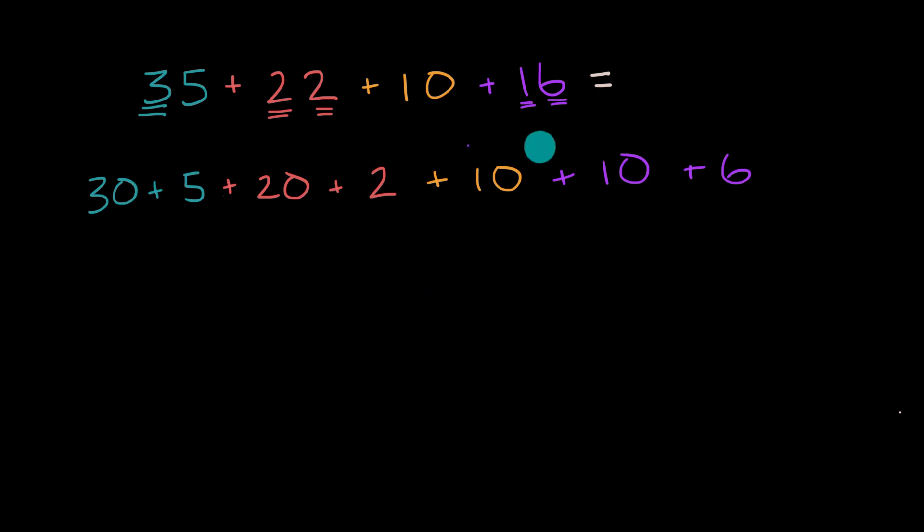Now, why was this useful? I could take all of the things that are a certain number of tens, so 30, 20, 10, and 10, and try to add those together. And then separately, I will try to add the five, the two, and the six. And when you see when I do it, I think it'll make a little bit of sense why it's useful.